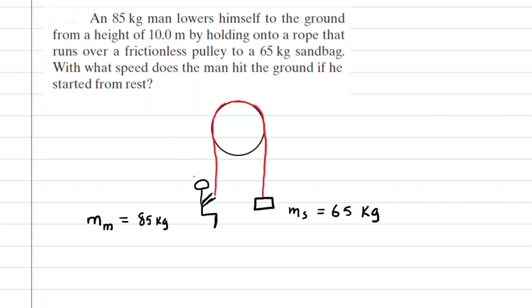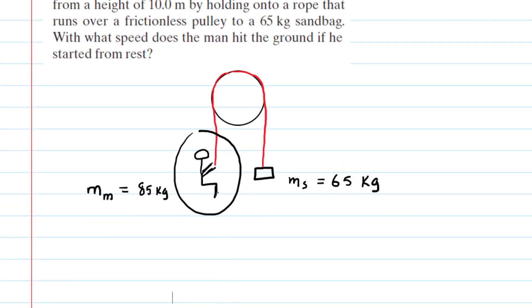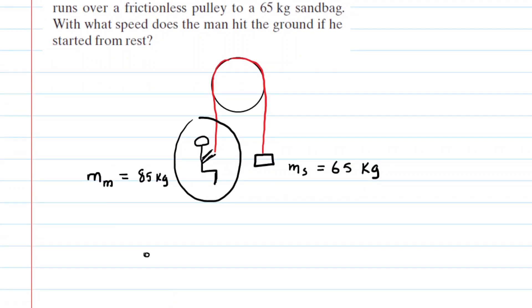What we will do first is choose our system to be this man right here, and we're going to draw a free body diagram showing the forces that are acting on the man. So we'll represent the man as a little dot, and then of course we have the gravitational force pulling down on the man. We're going to label that mg. We'll be a little specific. We'll do m with a subscript m for the mass of the man, times g.